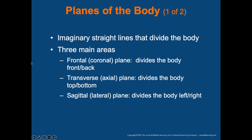There are different planes of the body — imaginary straight lines dividing the body into different areas. The coronal or frontal plane divides the body from front to back. The transverse or axial plane divides the body from top to bottom. The sagittal or lateral plane divides the body from left to right. The mid-sagittal plane cuts the body in half, leaving equal left and right halves.